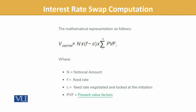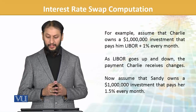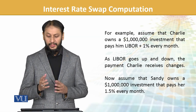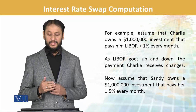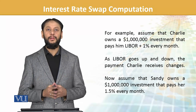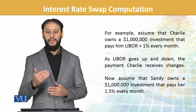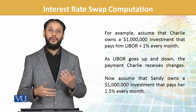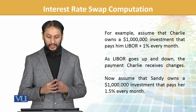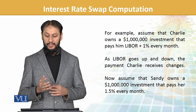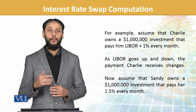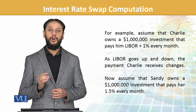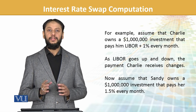For example, assume that Charlie owns a one million dollar investment which pays him LIBOR plus one percent. LIBOR is the London Interbank Offered Rate, so his return tends to change up and down. Sandy owns a similar one million dollar investment that pays her 1.5% every month.